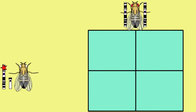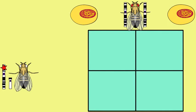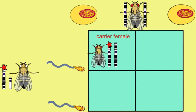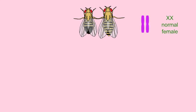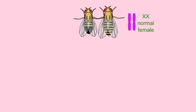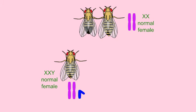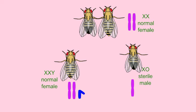Even though gender in fruit flies is determined by sex chromosomes — males are heterogametic (XY) and females are homogametic (XX) — there are differences between how gender is determined in flies and humans. In flies, it is the ratio of X chromosomes to autosome count that determines gender. So XX and XXY individuals are female in flies, while in humans, XXY individuals are male and X-only individuals are female (Turner Syndrome).